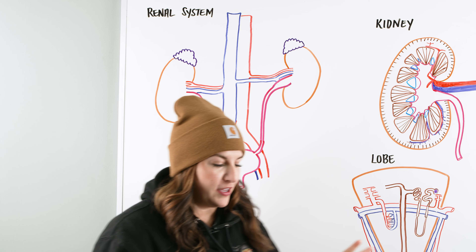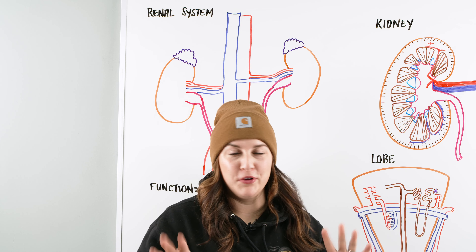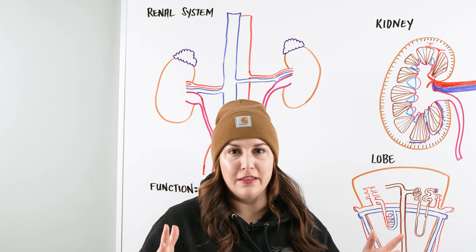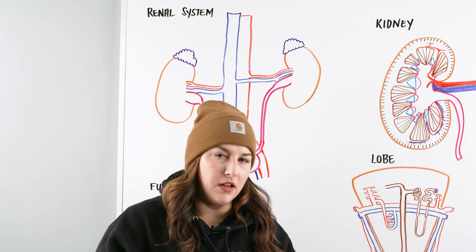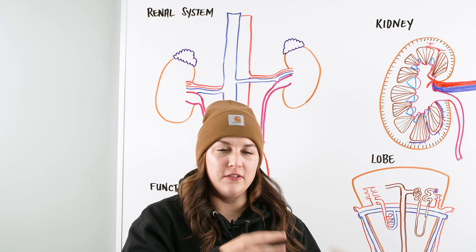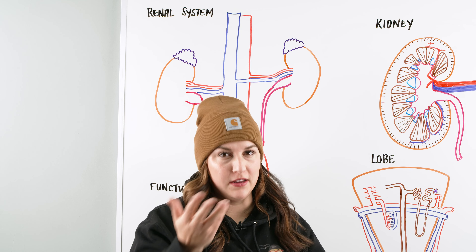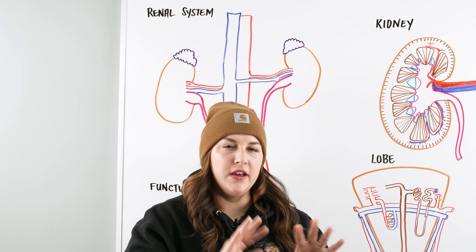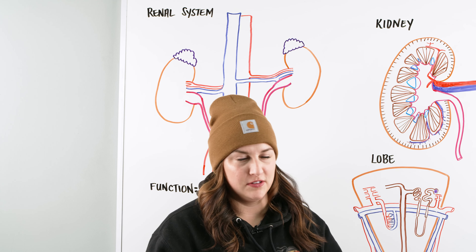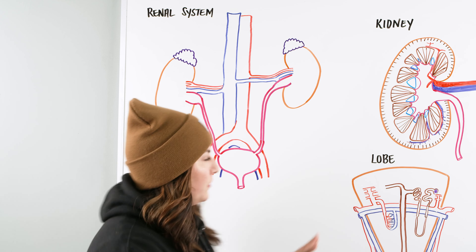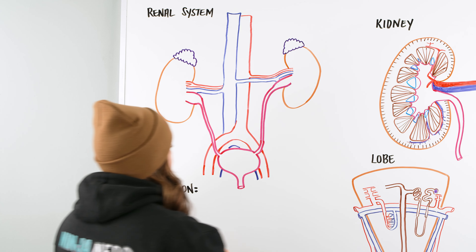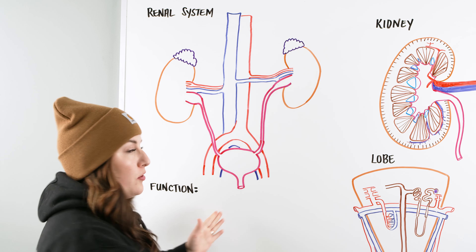You're probably learning about renal structure and function for your class and thinking there's a lot going on. What I like to do is break down the renal anatomy by what it's used for. We basically have blood and we have urine. When you separate those two in your mind, you get a better understanding of the renal system. So let's go over the major points and major structures within our renal system.